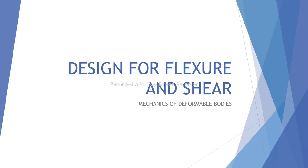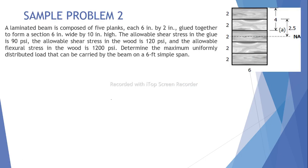Welcome to sample problem number two for Design for Flexure and Shear in Mechanics of Deformable Bodies. Here we have a laminated beam made of five planks, each six inches by two inches. These planks are glued together, forming an overall beam that is six inches wide by ten inches high.